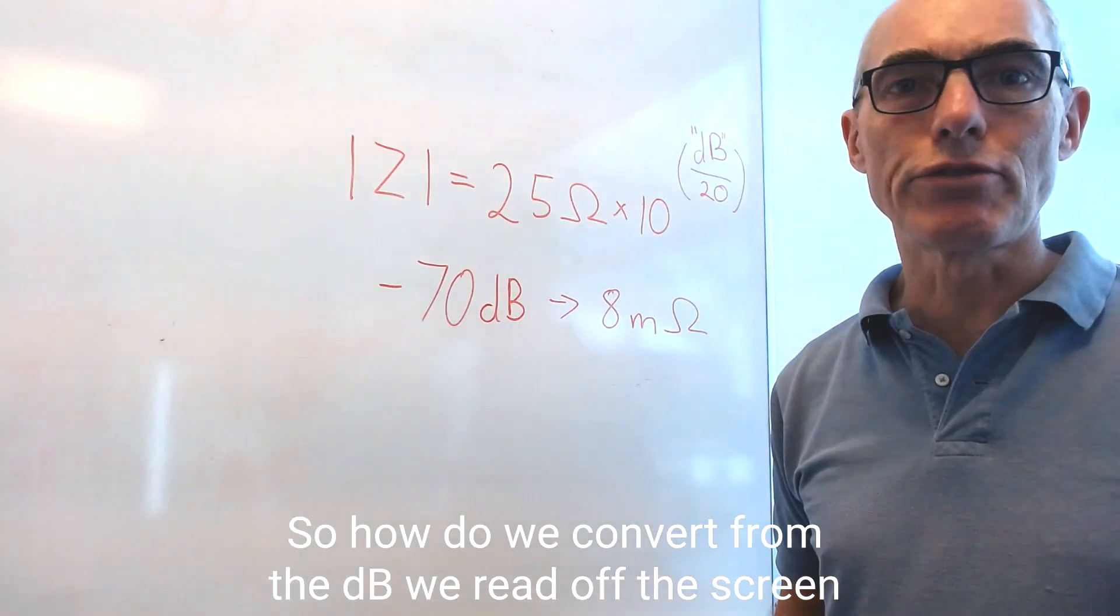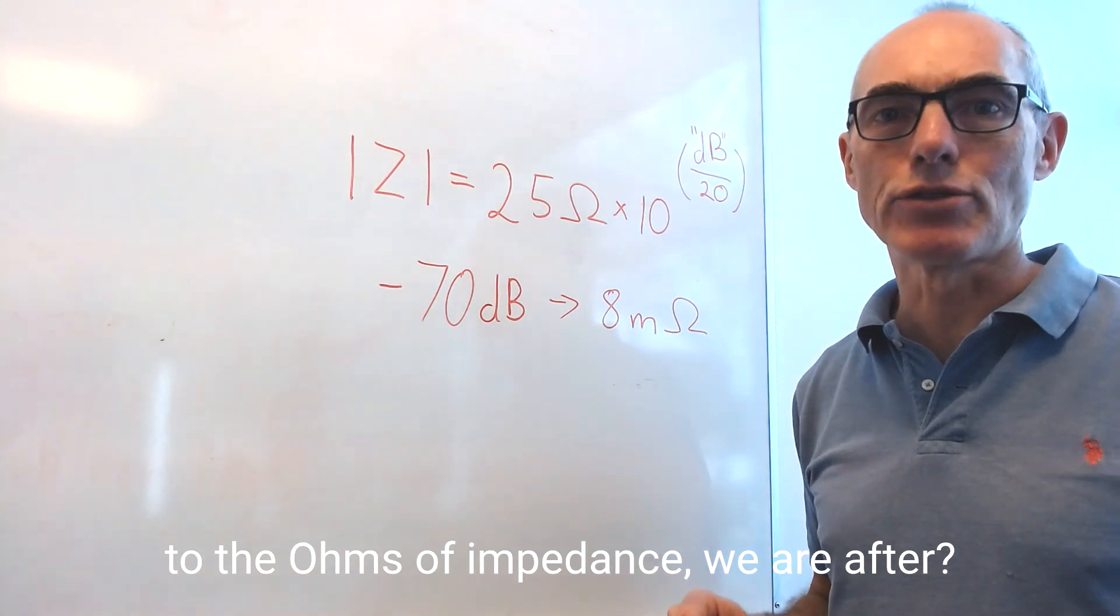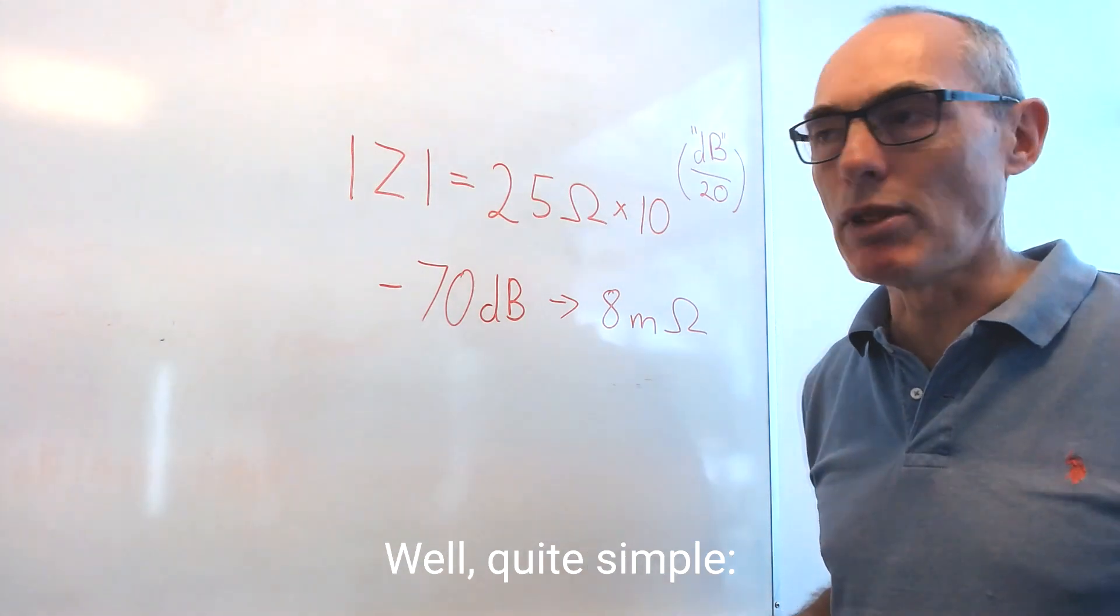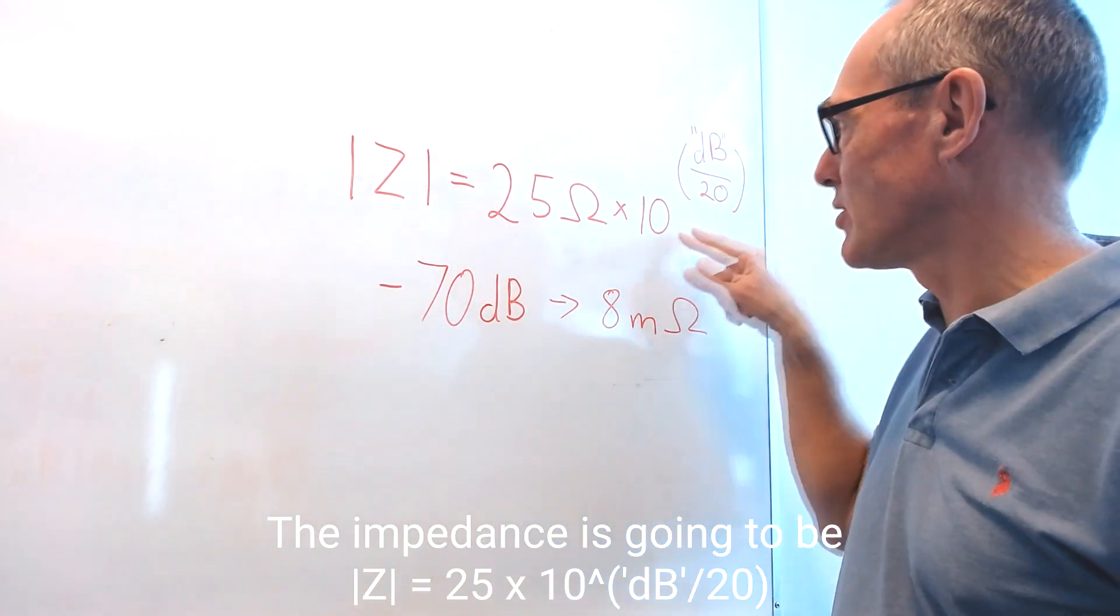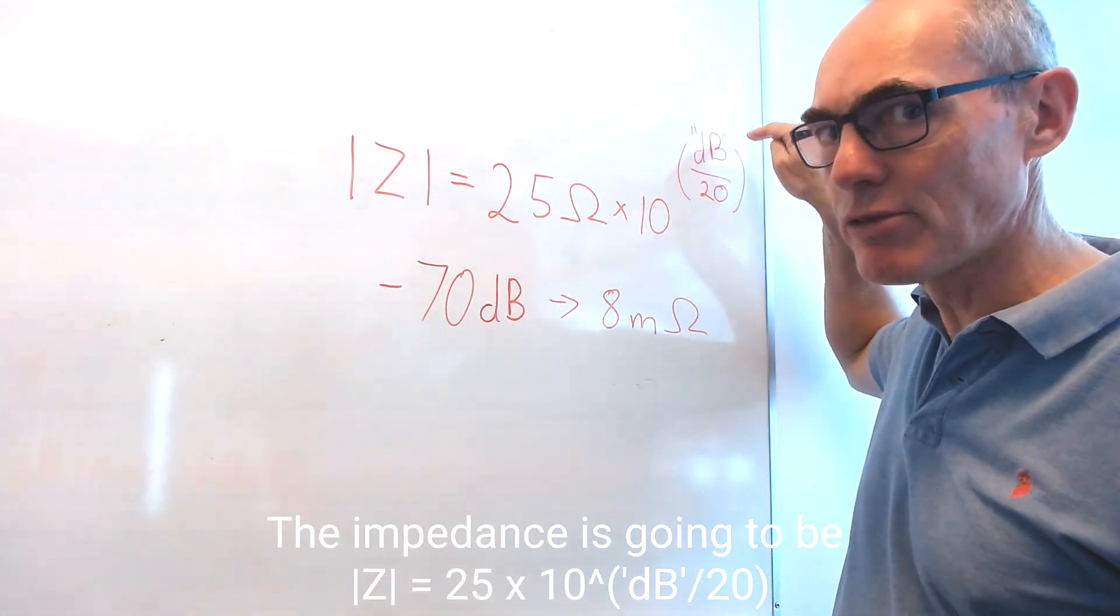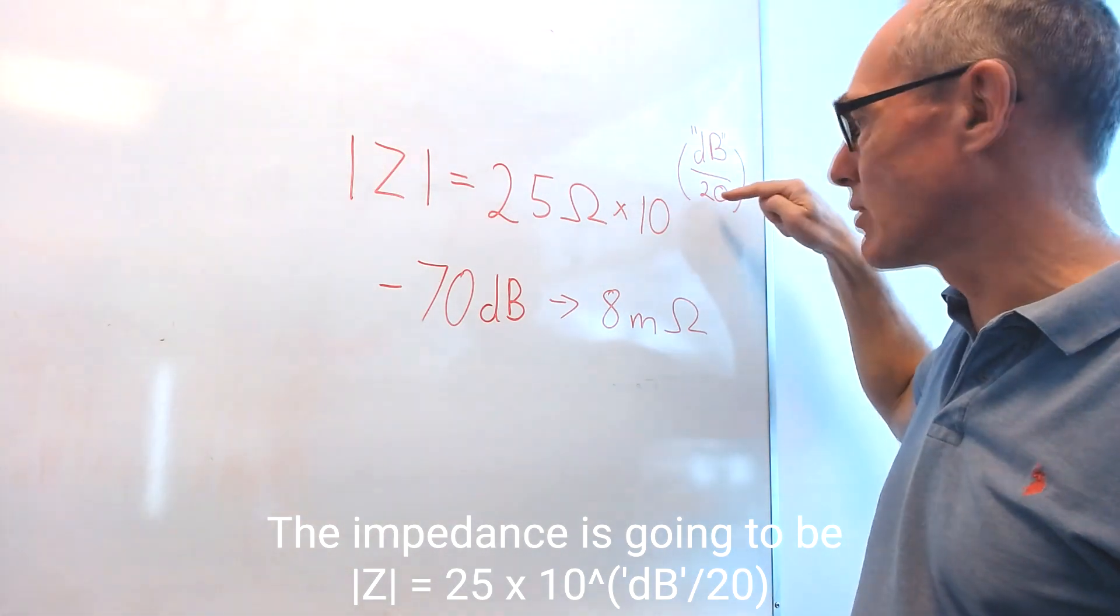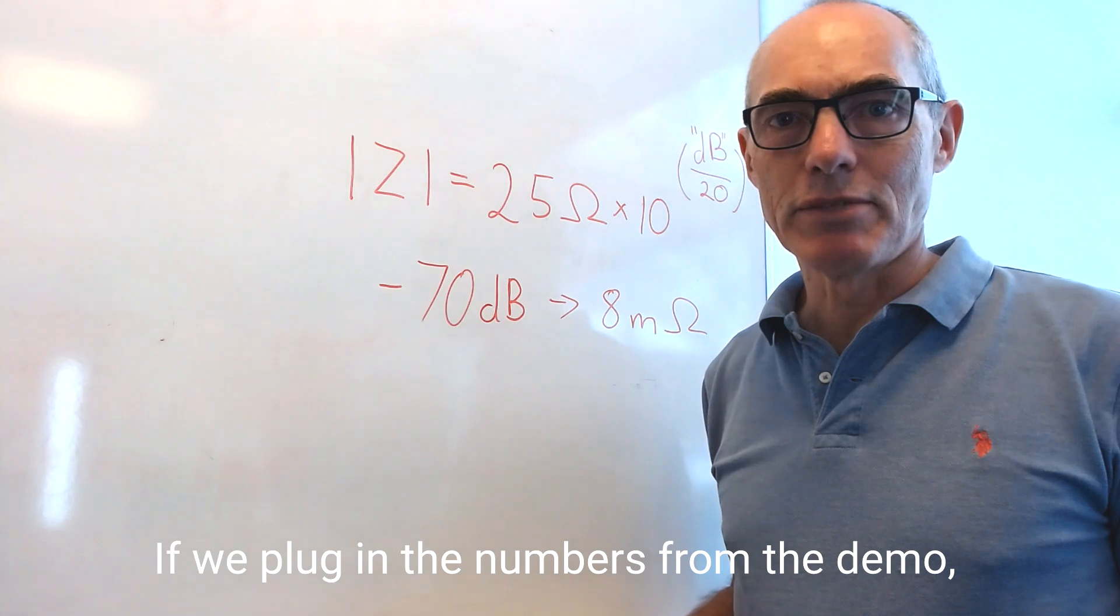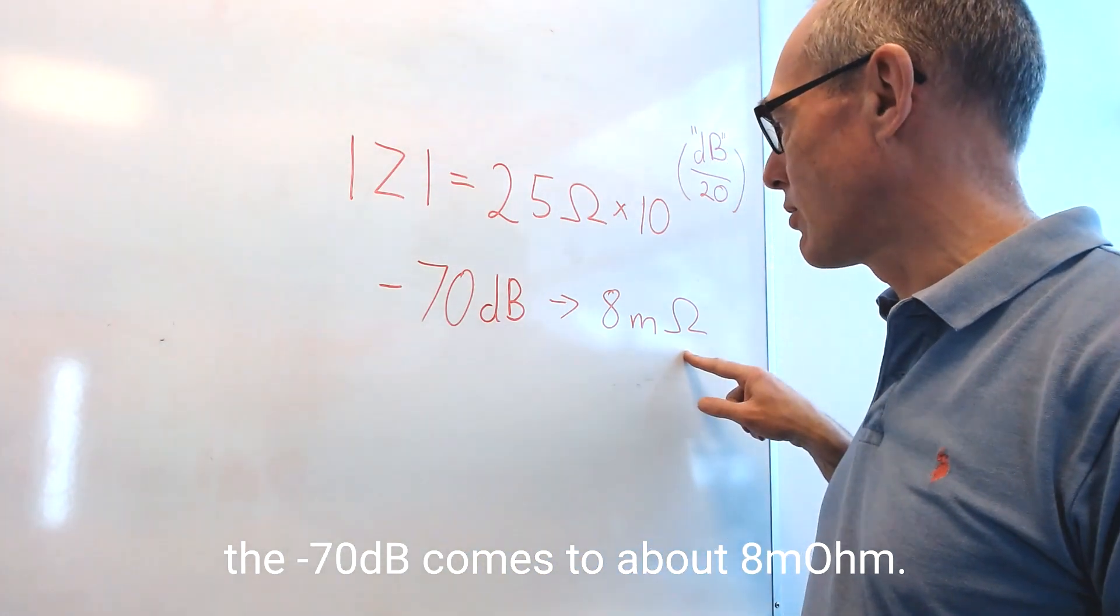So how do we convert from the dBs we read off the screen to the ohms of impedance that we're after? Well, quite simple. The impedance is going to be 25 ohms times 10 to the dBs that we read off the screen, divided by 20, so dB divided by 20. If we plug in the numbers from the demo, minus 70 dBs comes to about 8 milliohms.